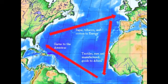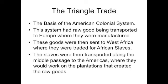Now we will discuss the basis of the economy for the entire colonial region: something called the triangle trade. The triangle trade consisted of trade between North America, Europe, Africa, and back. The major things traded were raw goods, textiles and manufactured goods, alcohol, and unfortunately, slaves. Raw goods were transported to Europe where they were manufactured, then sent to West Africa where they were traded for African slaves. The slaves were then transported along what was called the Middle Passage to the Americas, where they would work on the plantations that created the raw goods.